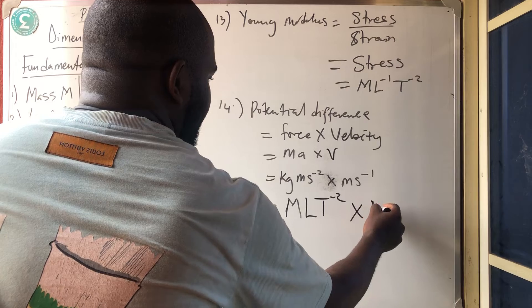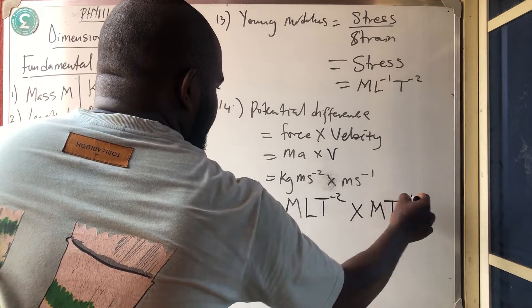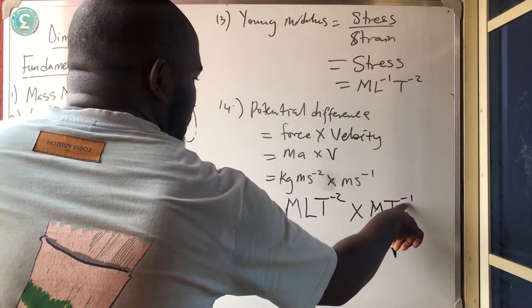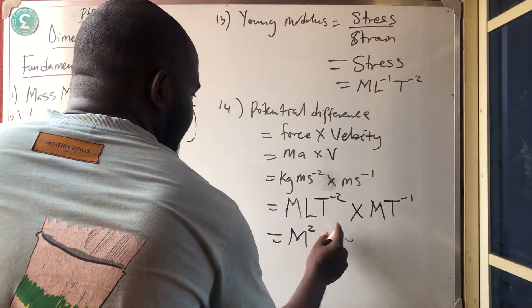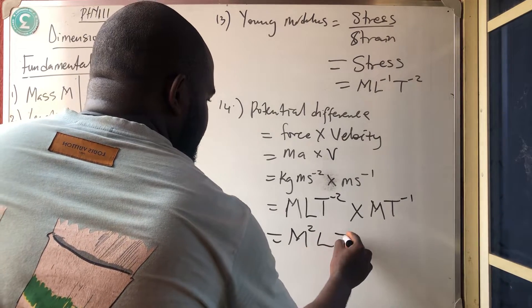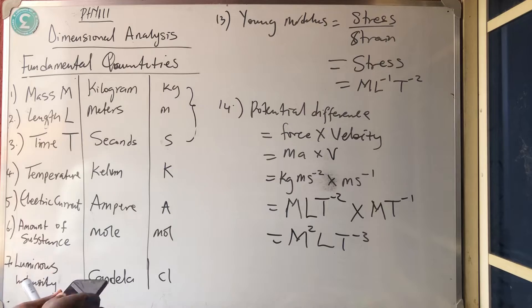Times meter again, and second. So minus 2, minus 1 will give you minus 3. So I'm having m, m is 2, m squared, l, t raised power minus 3. So that is that for number 14.